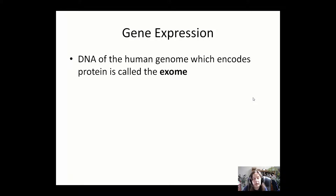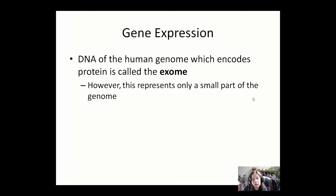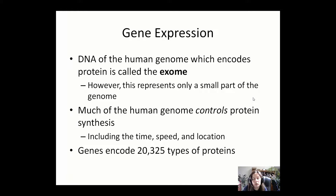As we said earlier, the human genome contains both non-coding DNA and coding DNA. Coding DNA represents only a small part of the genome, about 1.5%, and consists of about 20,000 different genes. The coding part of the genome is known as the exome. Much of the exome controls protein synthesis, and the 20,000 genes code for 20,000 different types of protein.